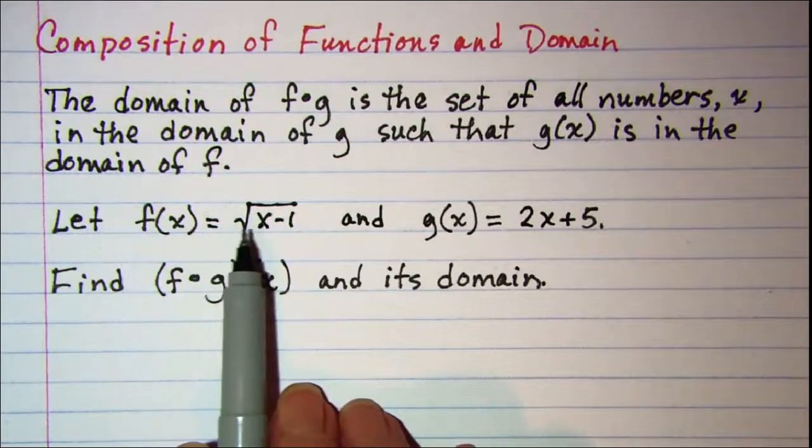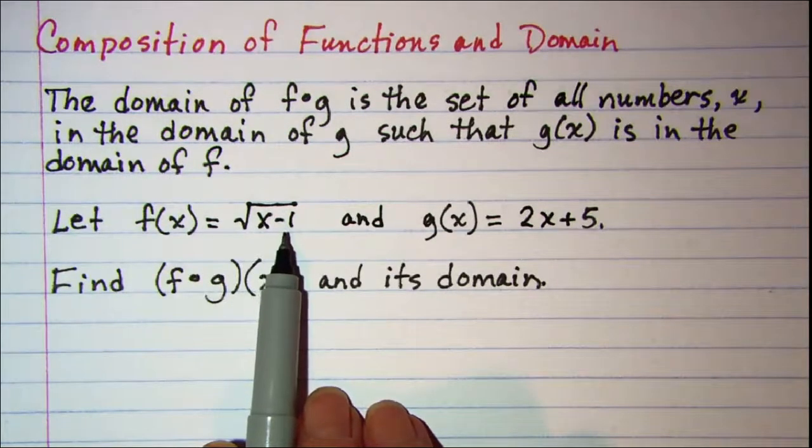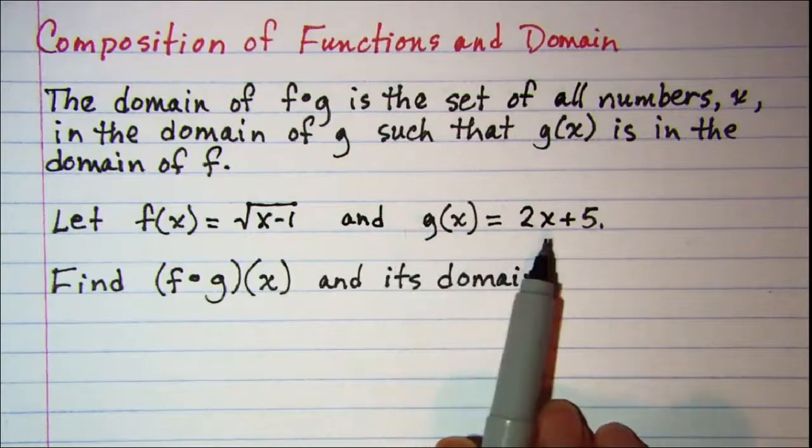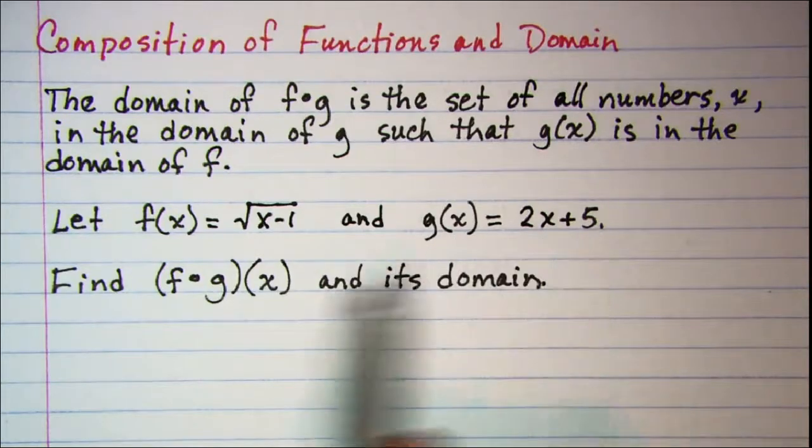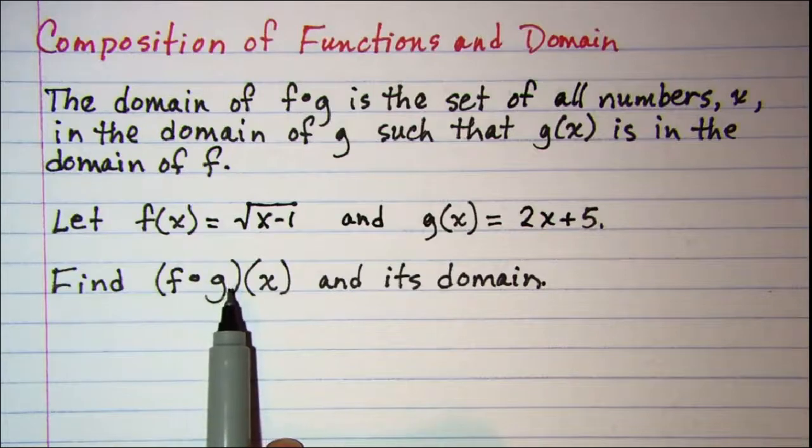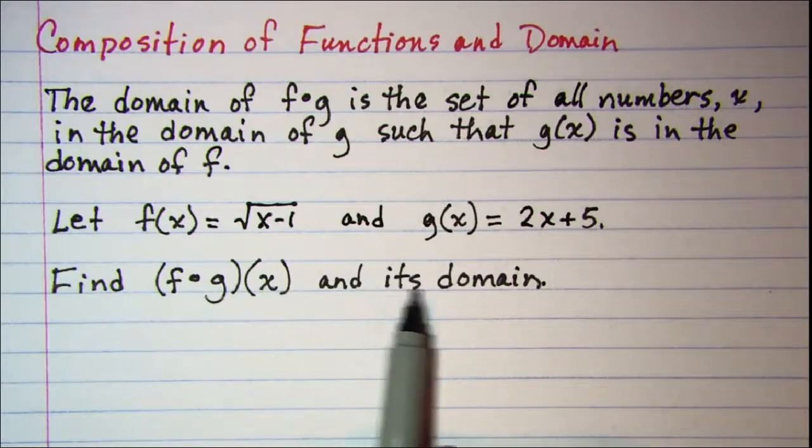Let f(x) equal the square root of x minus 1 and g(x) equal 2x plus 5. We're asked to find f composition g of x and its domain.